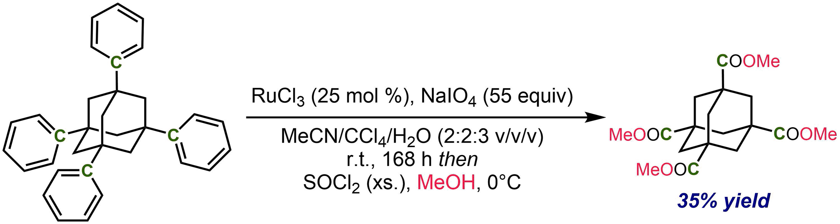Ruthenium tetroxide is a potential staining agent. It is used to expose latent fingerprints by turning to the brown-black ruthenium dioxide when in contact with fatty oils or fats contained in sebaceous contaminants of the print.